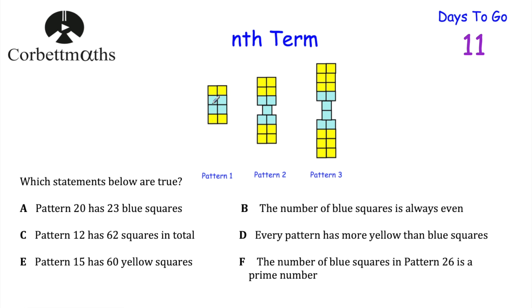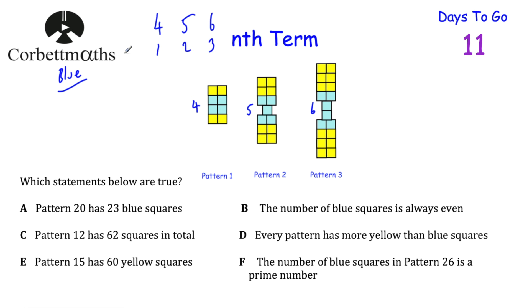Let's look at a pattern of yellow and blue squares — patterns 1, 2, and 3. We need to decide which of statements A through F are true. Statement A says pattern 20 has 23 blue squares. Counting blues: 4, 5, 6 — going up by 1 each time, so the number of blues in pattern n is n plus 3. For pattern 20: 20 plus 3 equals 23. So statement A is true. Statement B says the number of blue squares is always even. But we have 4, 5, 6 — 5 is odd, so B is false.